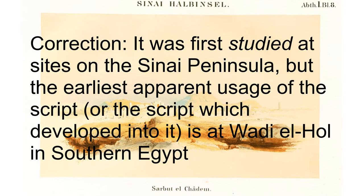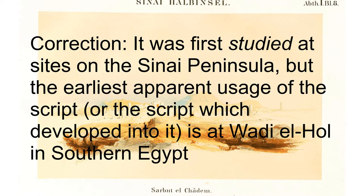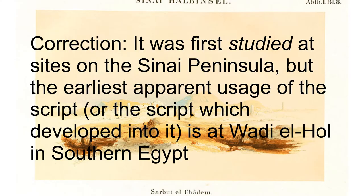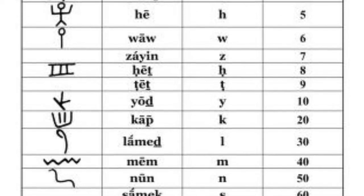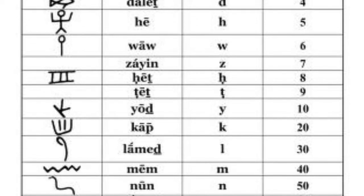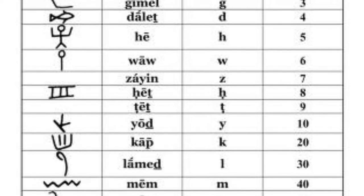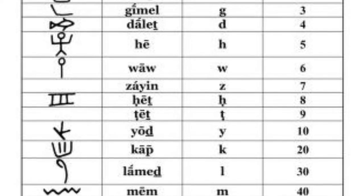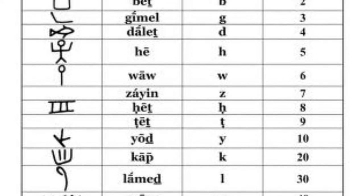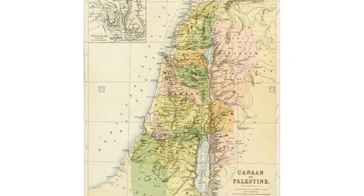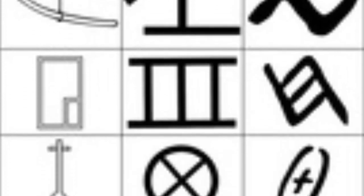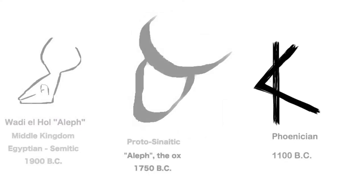so named because it's first seen at Canaanite work sites on the Sinai peninsula. This script was much simpler than the hieroglyphic script, with about one symbol per consonant, making it a true abjad rather than the mixed system of Egypt. Workers returning home to Canaan brought this script with them, and over time it evolved, becoming easier to write. The ox head was simplified to this, for example.